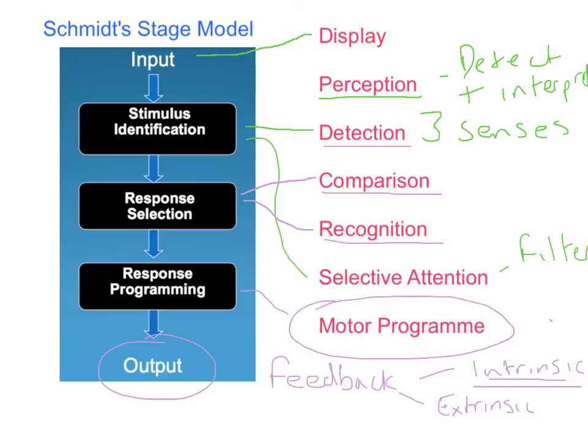We find a corresponding past experience to the situation that we're in. We then send that motor program that we found in our long-term memory to our muscles via the central nervous system and we perform the movement. Hopefully, we select the right motor program and the movement is successful.